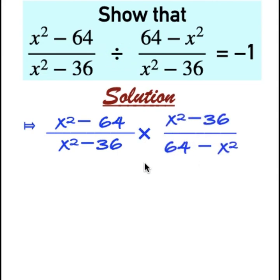Now there are common factors here. We have x squared minus 36 and x squared minus 36. They will cancel each other.